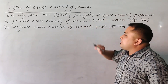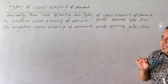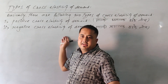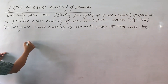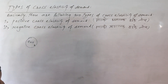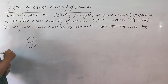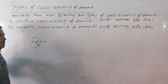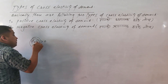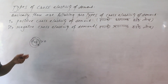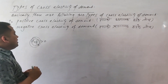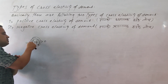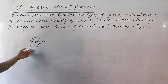If the percentage change in price of Y commodity has a positive impact on the percentage change in quantity demanded for X commodity, then it is said to be positive cross elasticity of demand.